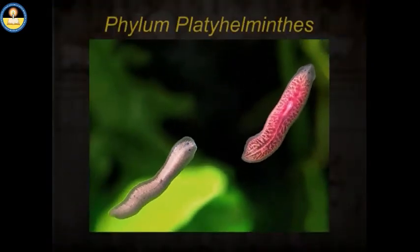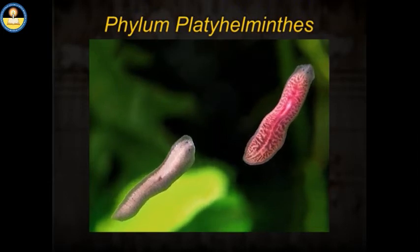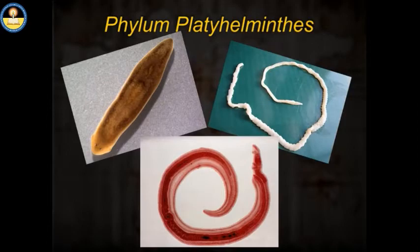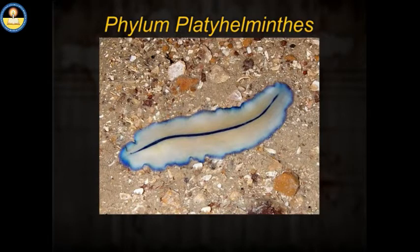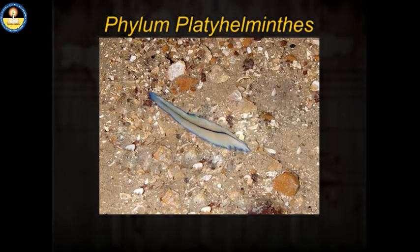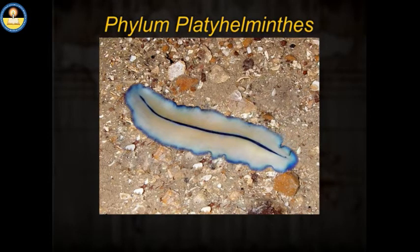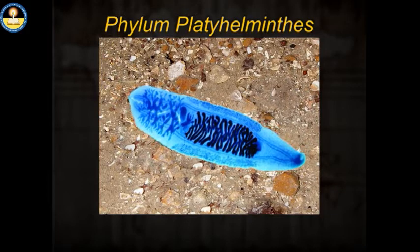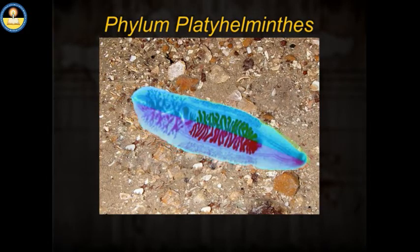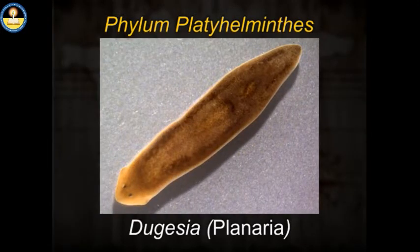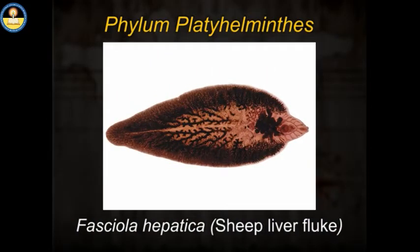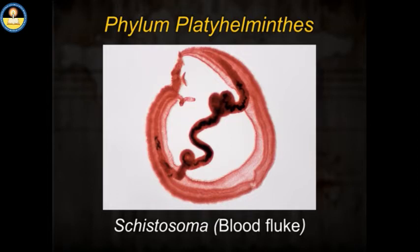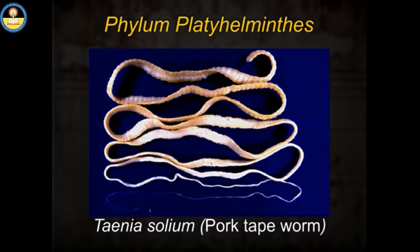Phylum Platyhelminthes. The Platyhelminthes include free-living flatworms like the planarians and the parasitic tapeworms and flukes. The term flatworm refers to the fact that the body is dorsoventrally flattened. Flatworms are the first organisms to have tissues organized into organs and the first to demonstrate bilateral symmetry. Examples: Dugesia (planaria), Fasciola hepatica (sheep liver fluke), Schistosoma (blood fluke), and Taenia solium (pork tapeworm).